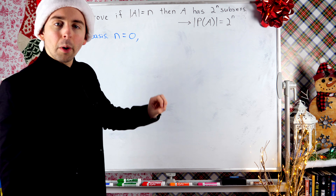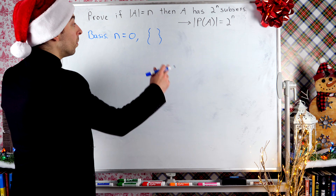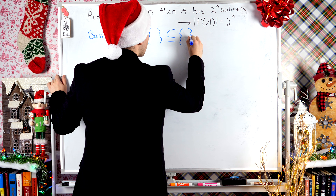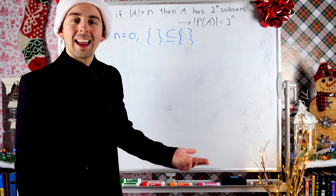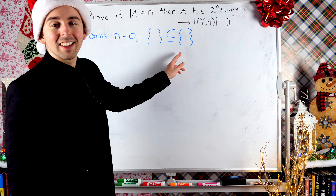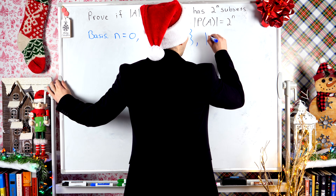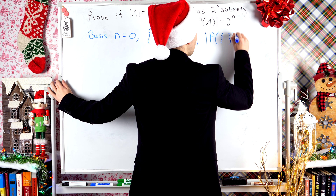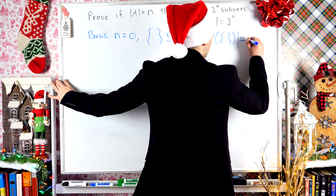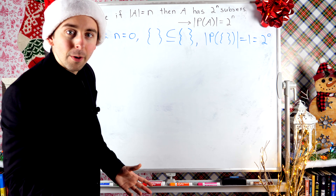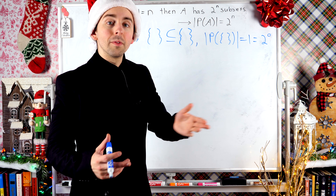Now what set has zero elements? Only one — it's the infamous empty set. By definition of subset, the only subset of the empty set is the empty set. If there were some non-empty subset of the empty set, that would be a contradiction because a non-empty set has elements the empty set doesn't. So the empty set has one subset, and one is of course two to the power of zero. We've proven our result in this first case: all sets with zero elements have two to the power of zero subsets.